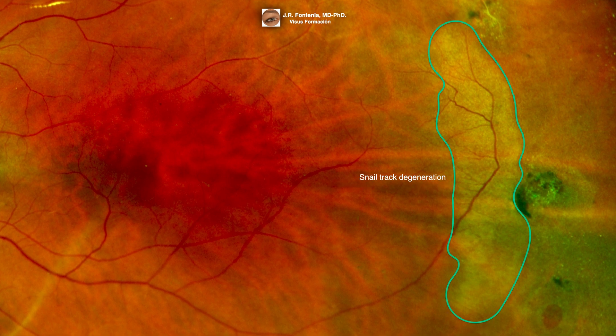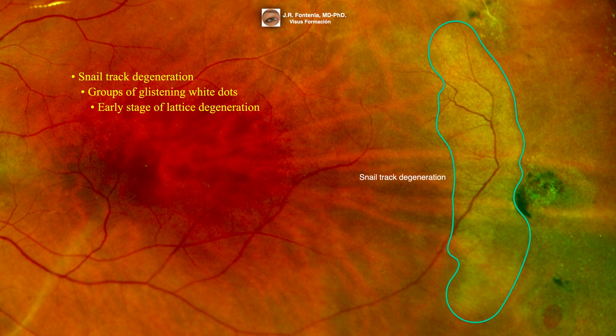Here we can see a snail track degeneration. It is defined as groups of glistening white dots, which have been compared to frost granules or salt. Snail track degeneration may be an early stage of lattice degeneration.